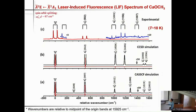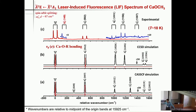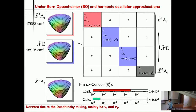This is because this is a transition to the nu-8 mode, which is the calcium-oxygen-methyl group bending. This is an asymmetric mode. Under the Born-Oppenheimer approximation and harmonic oscillator approximation, the Franck-Condon factor should be zero, and that's what we got. Although we have a little bit of intensity — on the order of 10⁻⁵ — as Lan said, molecular spectroscopists usually don't care about it at all, but AMO physicists have much higher sensitivity and precision.